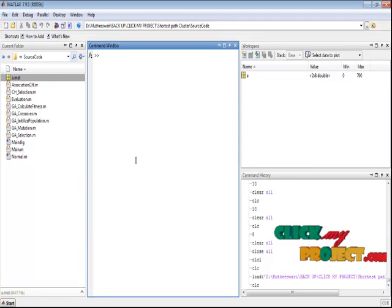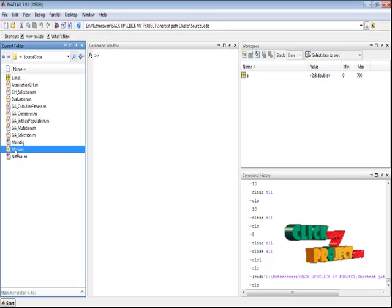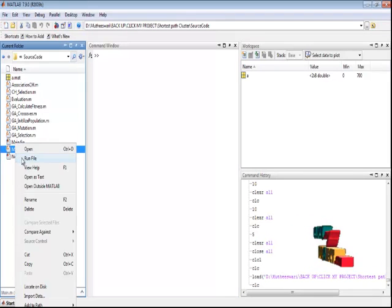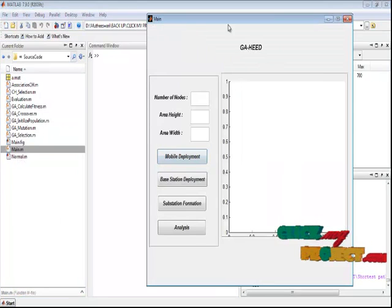Let we discuss about the running procedure for our process. Select the main.m file in the current folder. Right-click the file and run for executing this process. This is the main window of the GA-based HEED protocol. Here we need to enter the number of nodes.